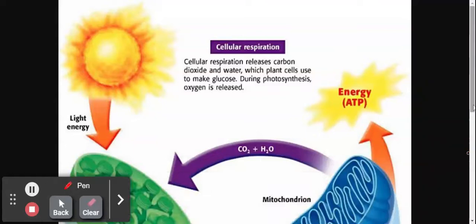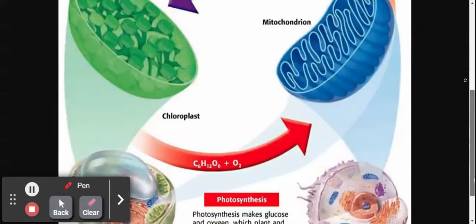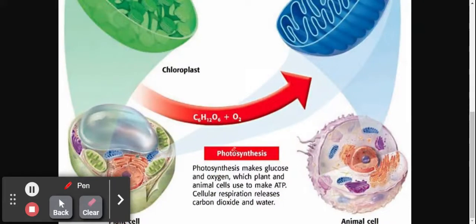Hey there scientists, this is Mrs. Geis and today we're going to talk about the amazing relationship between cellular respiration and photosynthesis. So we know that cellular respiration occurs in animal cells, we know that photosynthesis occurs in plant cells. Okay, so here I have a plant cell, here I have an animal cell.